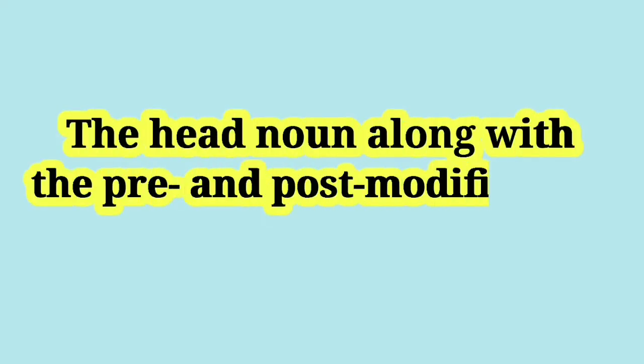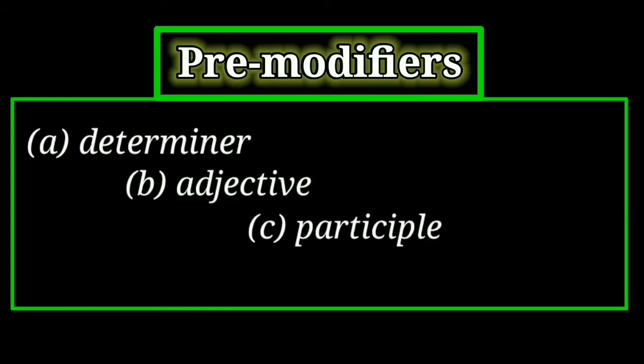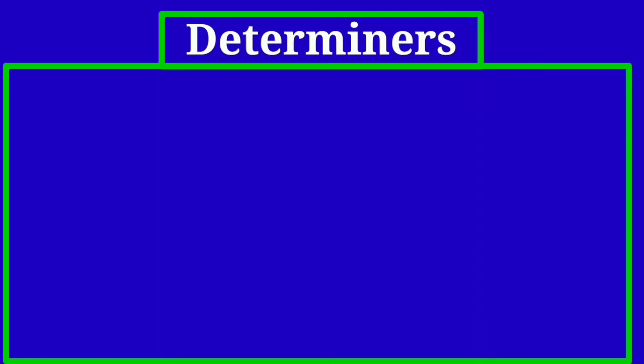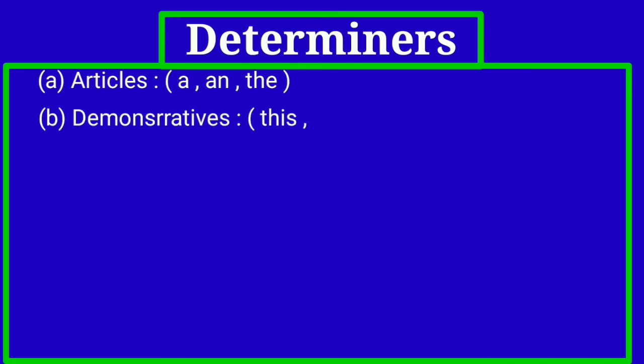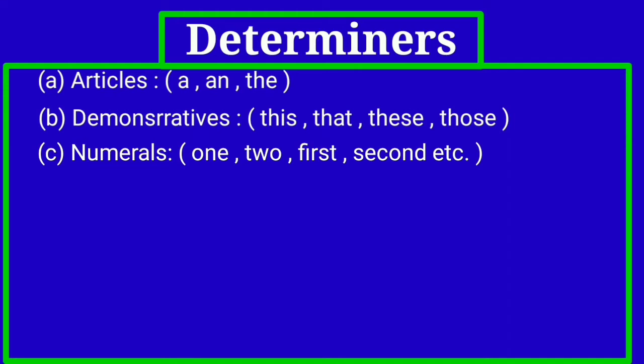Let us start our class. The head noun along with the pre- and post-modifiers is called the noun phrase. Pre-modifiers are words used before the head noun. Pre-modifiers may be determiner, adjective, participle, or noun — that we also call a classifier. Determiners determine the noun and are used before the head noun. The types of determiners include articles: 'a' and 'the'; demonstratives: this, that, these, those; and numerals: one, two, first, second, etc., which may be cardinal or ordinal.